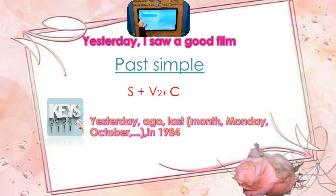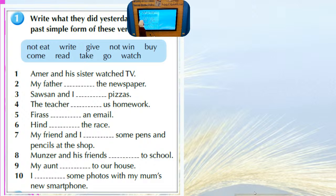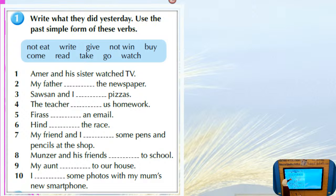Now we have Exercise 1 in your activity book: write what they did yesterday. We have the key word 'yesterday'. Use the Past Simple form of these verbs. We have 'not eat' — it's negative. What do we use with Past Simple in negative form? We use 'did not' — 'didn't' — plus verb one.